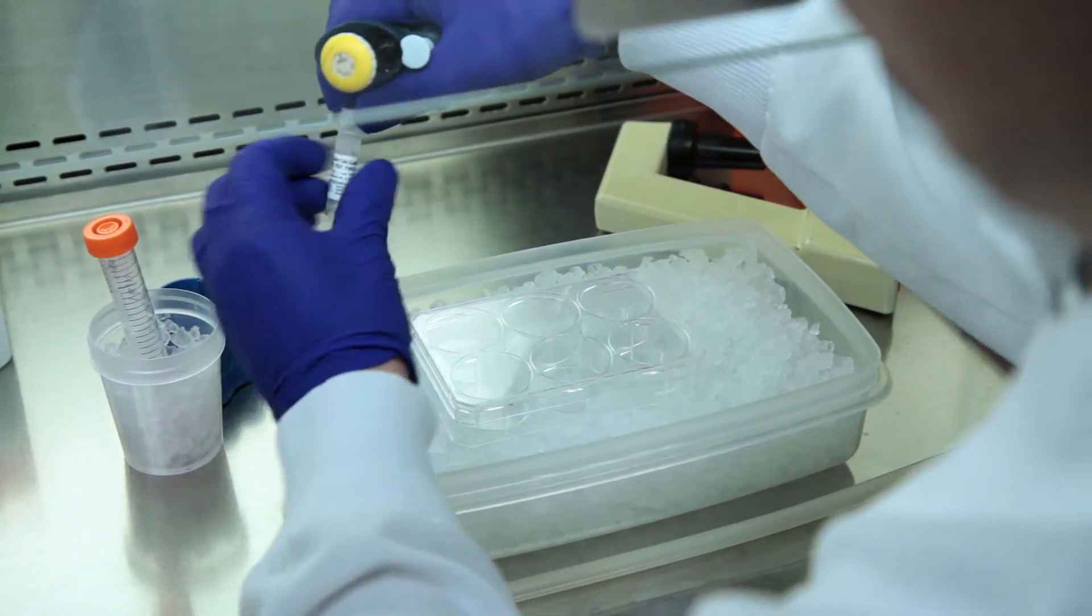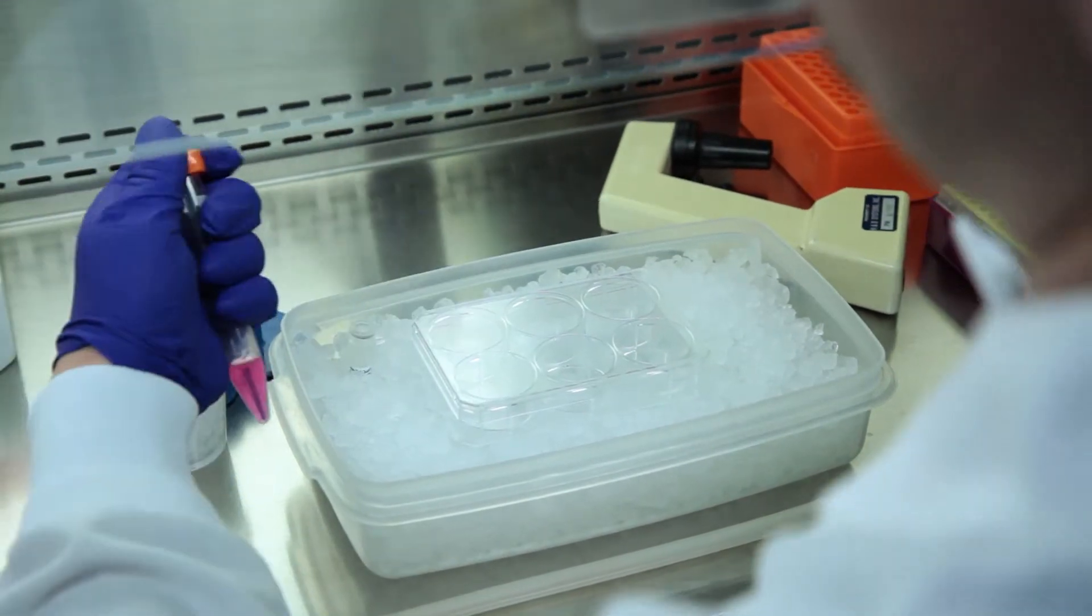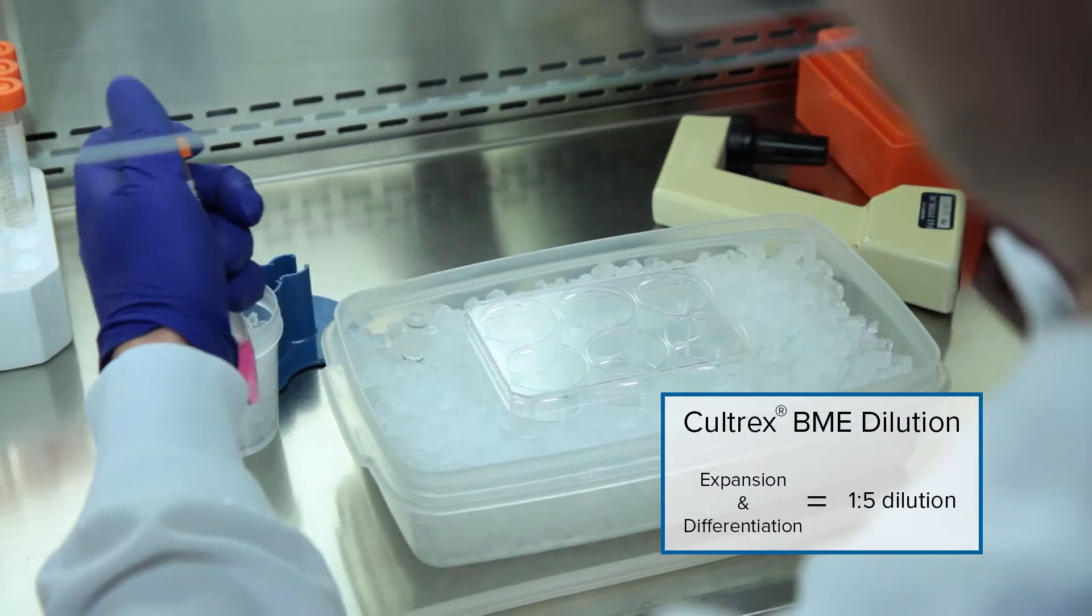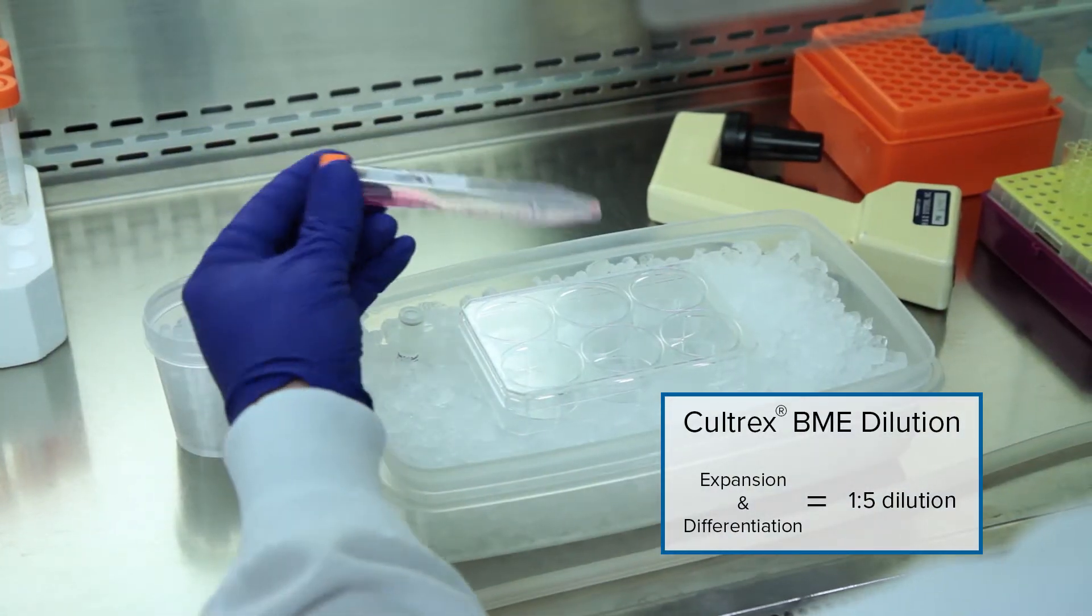When preparing Coltrex BME for stem cell expansion and for stem cell differentiation with transwell inserts, dilute the Coltrex BME 1 to 5 in cold DMEM F12 media.